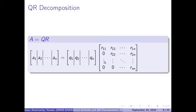This is our QR decomposition. When you have a matrix A, we can decompose it with the following columns, A1 to AN. We can decompose it toward the following columns Q1 to QN, and then this is our right upper triangular matrix R.